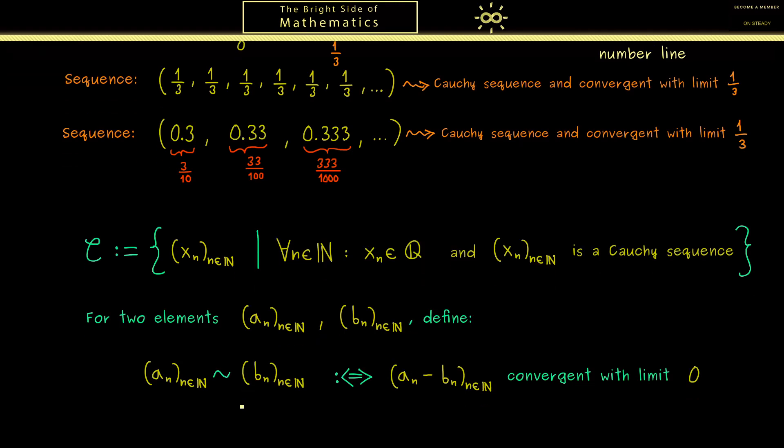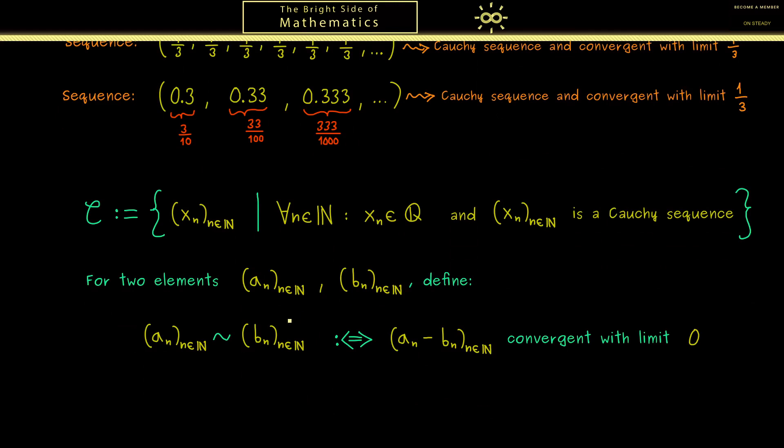Now we have everything we need because we can show that this defines indeed an equivalence relation. This means that we can show the three properties: it's reflexive, symmetric, and transitive.